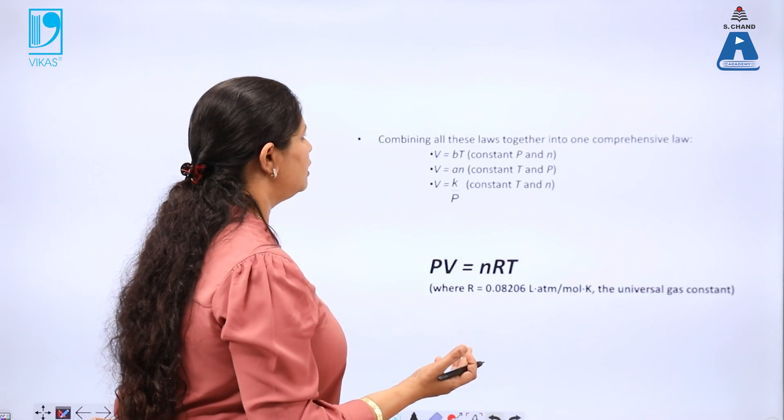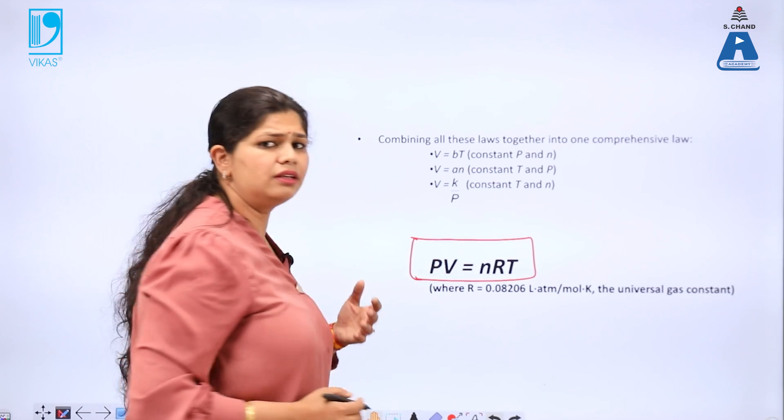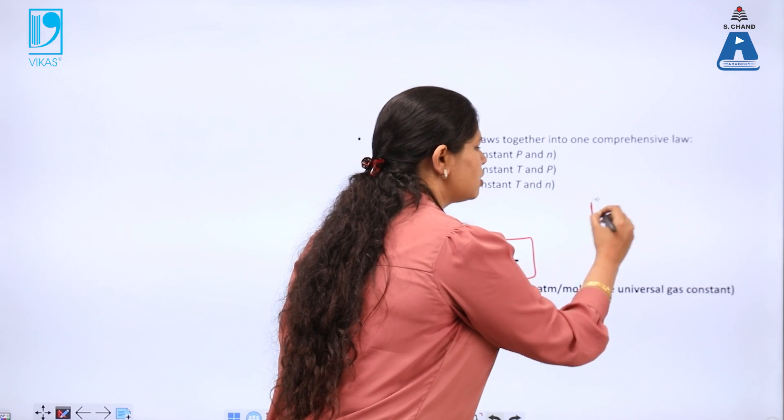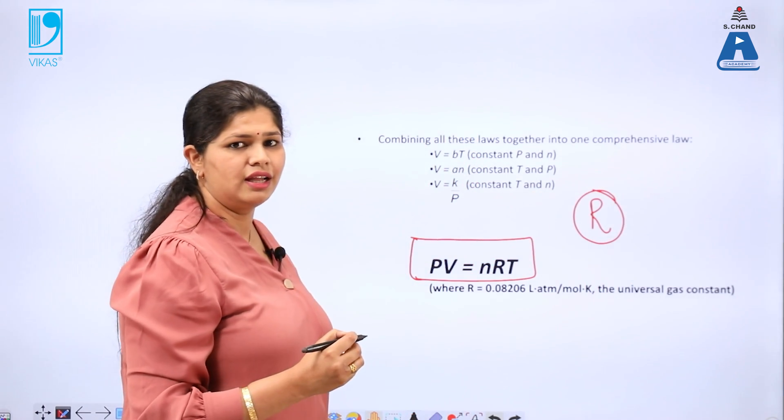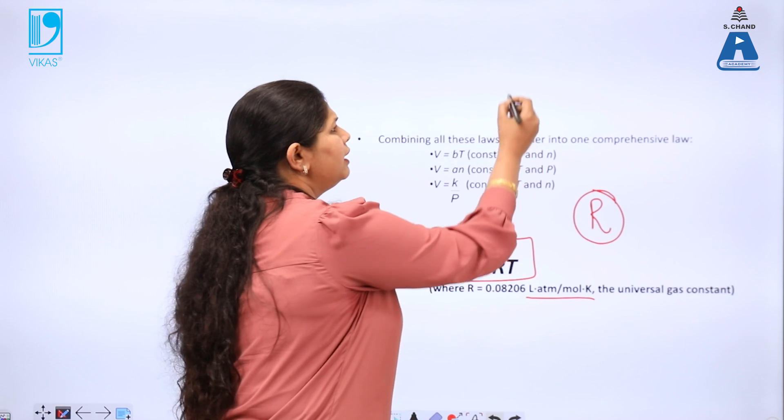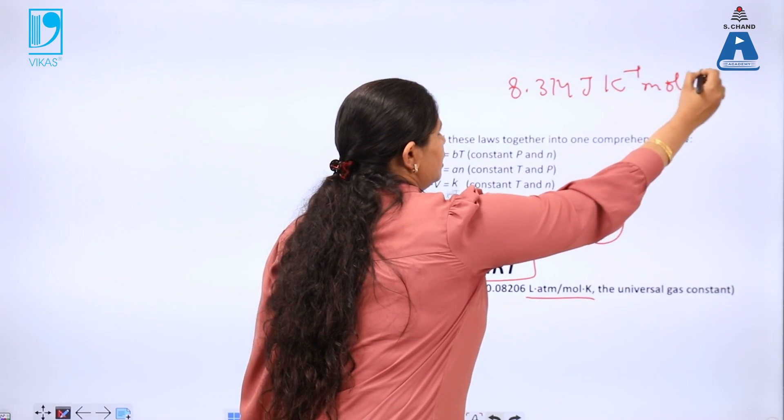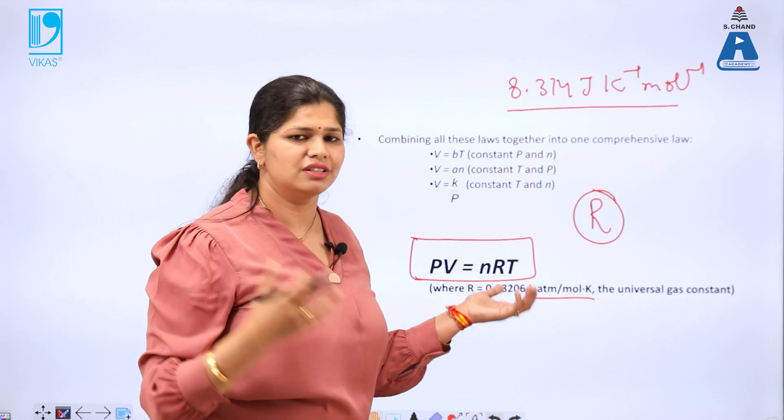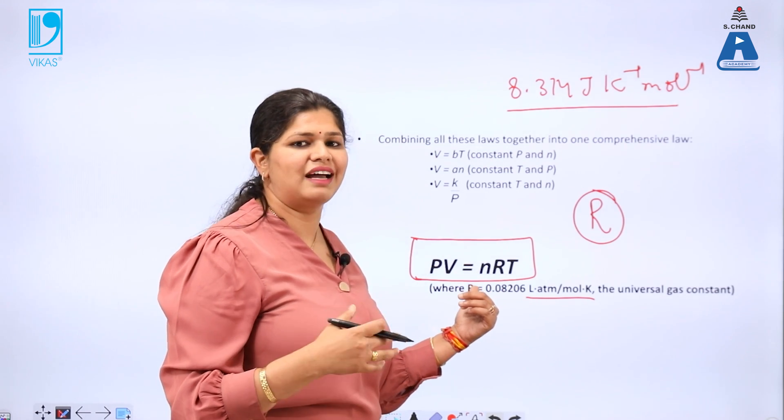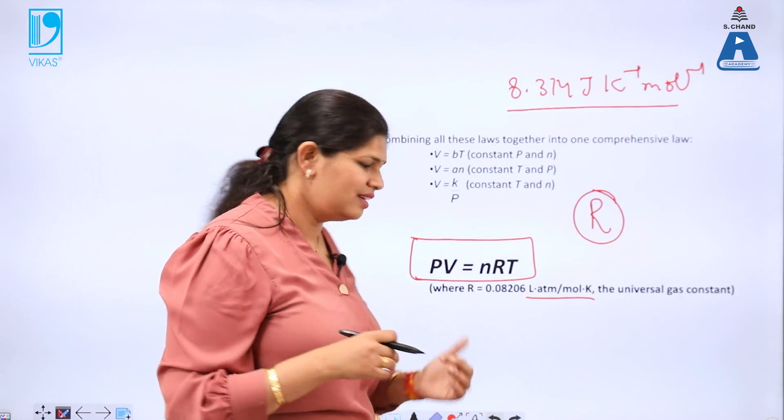Combining all these empirical laws, we get the equation of state which is called PV equal to nRT based on the experimental observations. On removing the proportionality, we get R as a constant which is called universal gas constant and its value in liters atmosphere per mole per Kelvin is given as this and mainly in SI unit we use 8.314 joules per Kelvin per mole. If all the gases would have obeyed ideal gas equation then our lives would have been very simple but this does not happen. This equation is valid only under certain conditions.